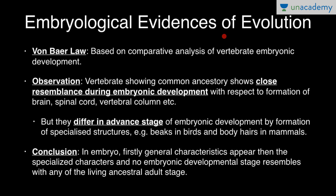Embryological evidences of evolution. For embryological evidences we have two laws: first is Von Baer's law and second is the biogenetic law. Von Baer's law is based on comparative analysis of vertebrate embryonic development. He observed that vertebrates showing common ancestry show close resemblance during embryonic development with respect to formation of brain, spinal cord, vertebral column, etc.